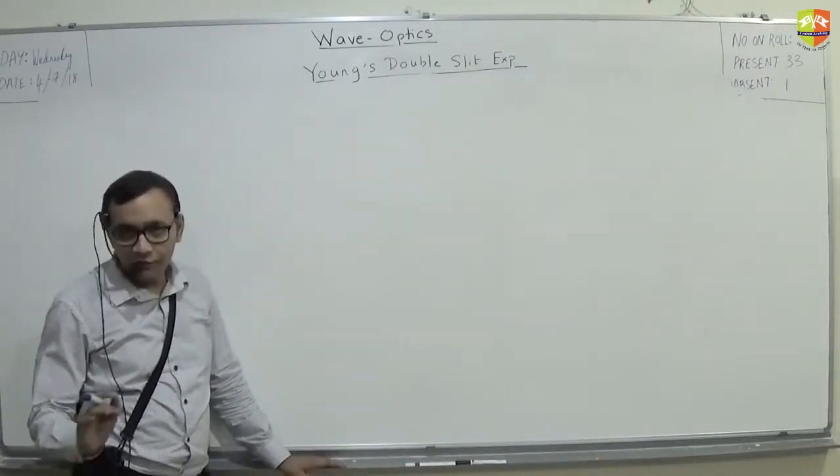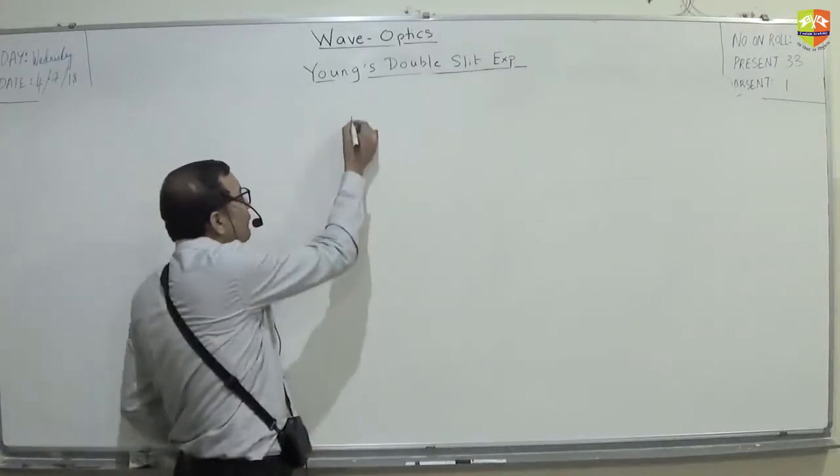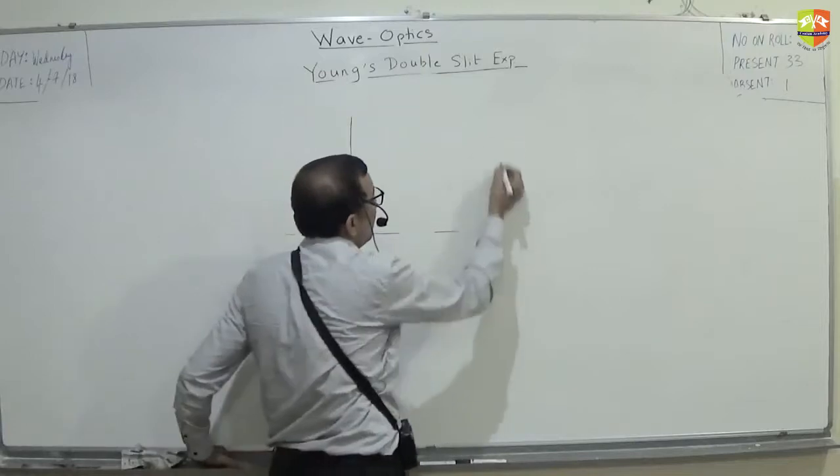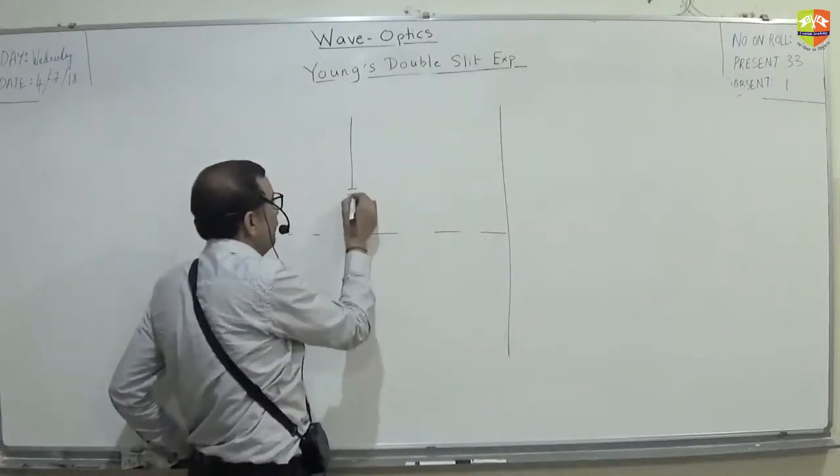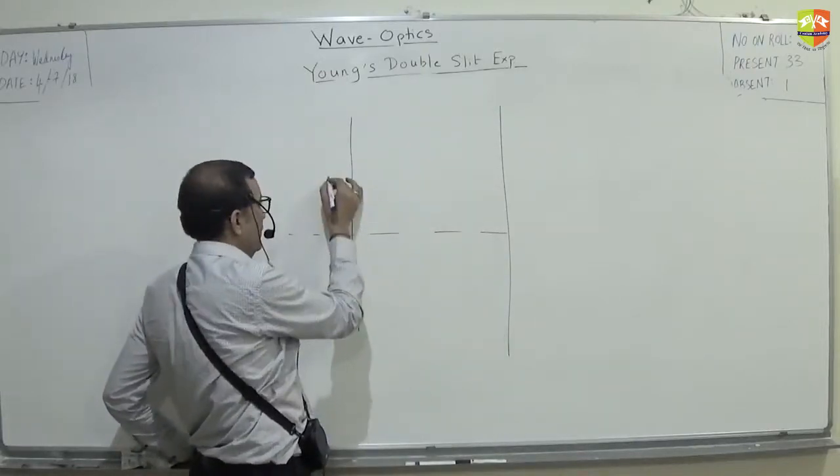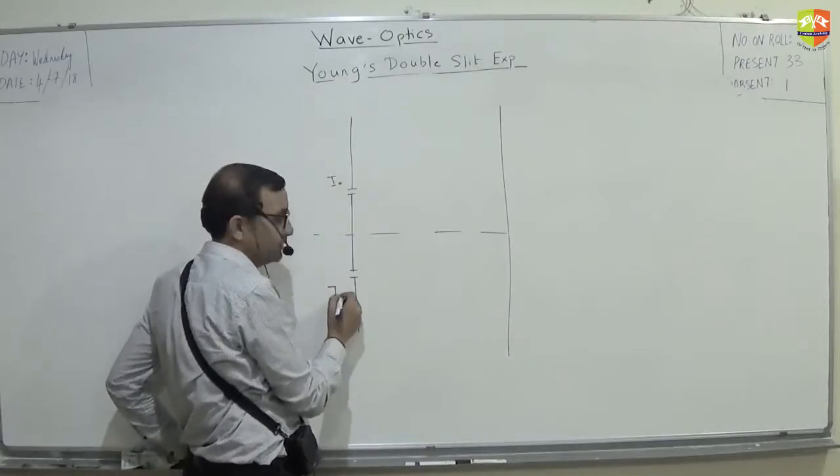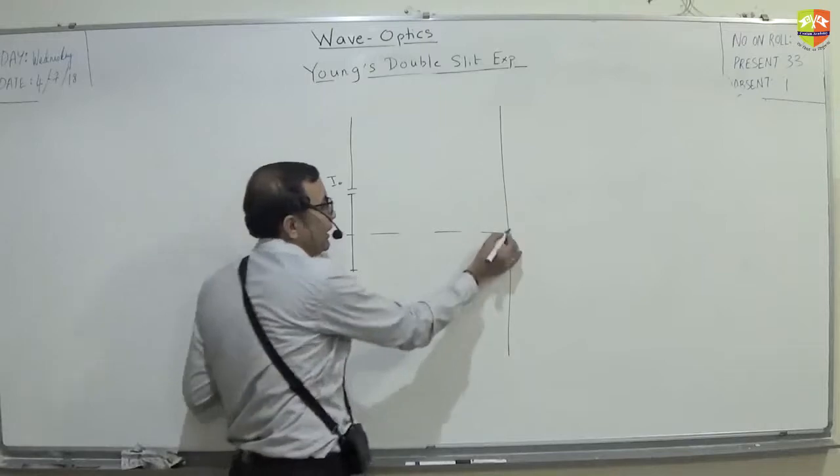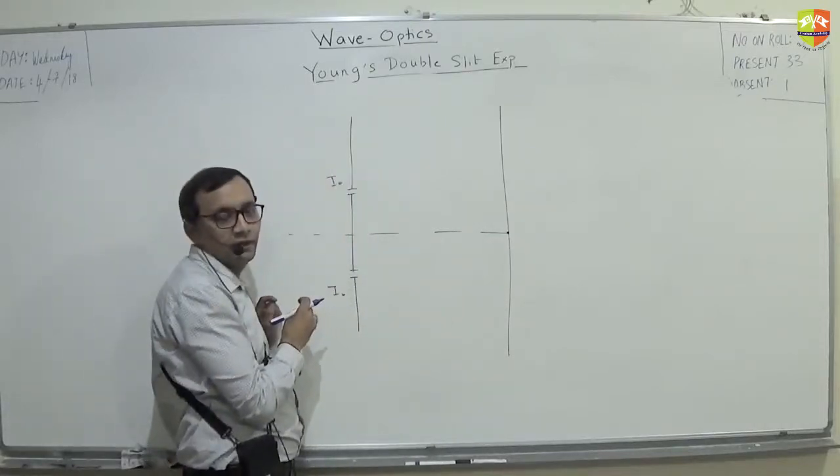The last question for the day. Fine. So, you have Young's double slit experiment like this. From here, intensity i0 and i0 comes in very simple experiment. I mean, there is no complication as such. Here, what is the intensity?